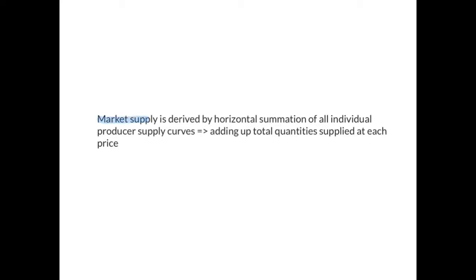How do we derive market supply? It's basically derived by horizontal summation of all individual producers' supply curves — you add up the total quantity supplied at each price. So individual supply is the supply of the firm or individual producer, while market supply is the supply of the industry — all the producers in that industry.